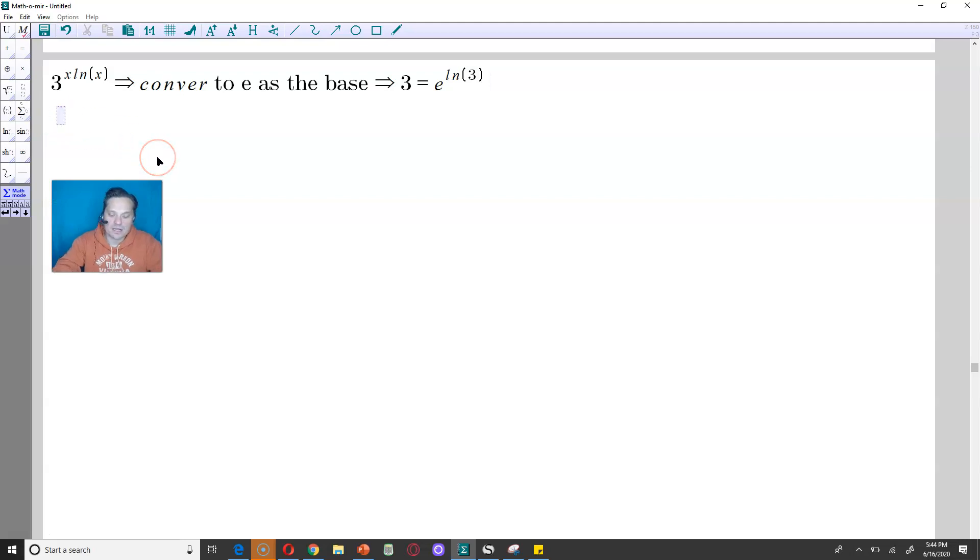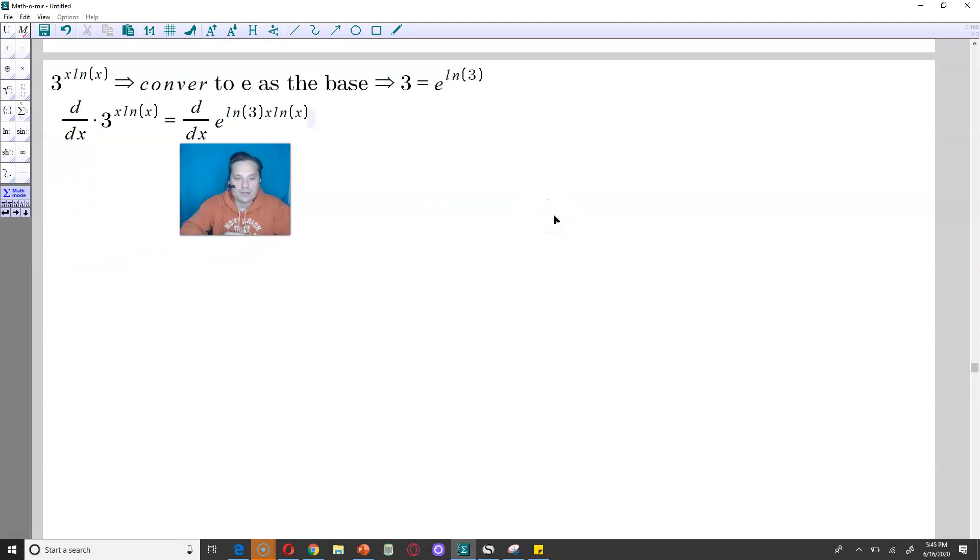So now what I'm going to do is proceed as follows. I will go and type d dx of this 3 raised to the x ln of x is equivalent to the derivative of e raised to the ln of 3 x ln x as follows. So now I'm going to apply the chain rule, and the basic rule is for e.